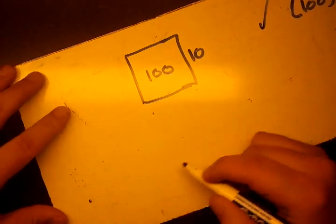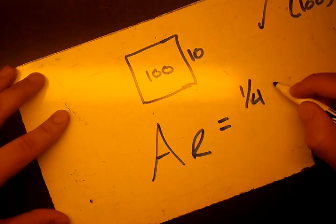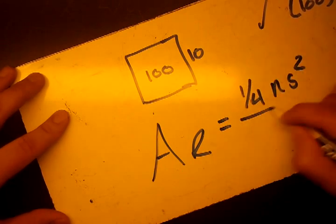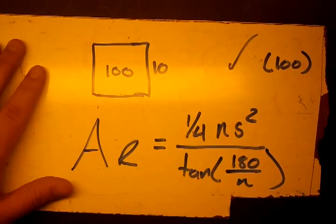Again, let's write the formula one more time. Area of the regular polygon is equal to one-fourth n s squared over tangent 180 over n. We should memorize that one. It'll help a lot in future competitions.